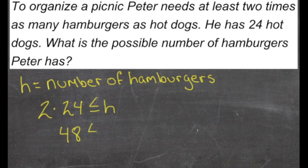So 48 is less than or equal to h, the number of hamburgers. Or we could say the number of hamburgers is greater than or equal to 48, which is twice the number of hot dogs.